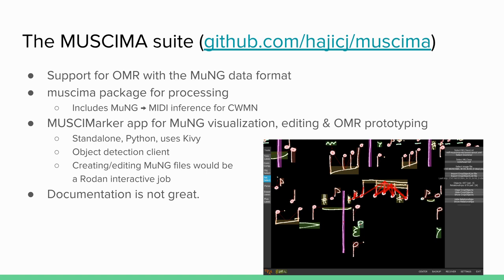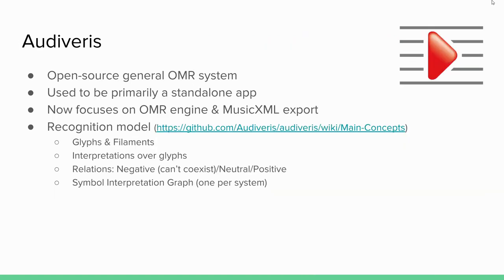The documentation for Muskema is not too great — it's essentially solo work. Then there is the Audiveris system, which is probably the oldest standalone OMR app available as open source. Gamera is for expert users who want control over the process, while Audiveris is more for users who enjoy having a black box to play with. But since it's open source, you can also look inside the box.